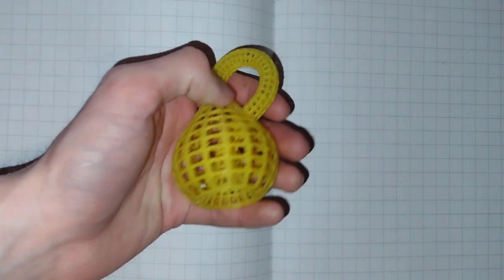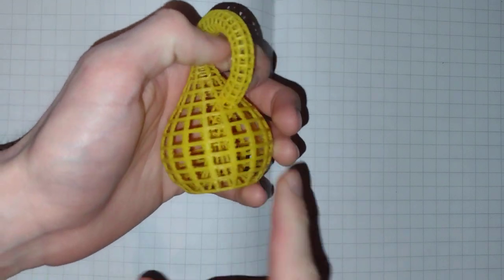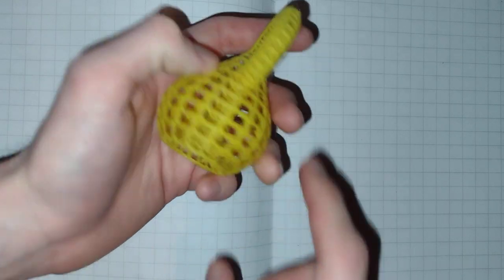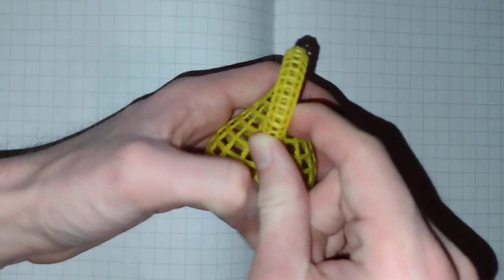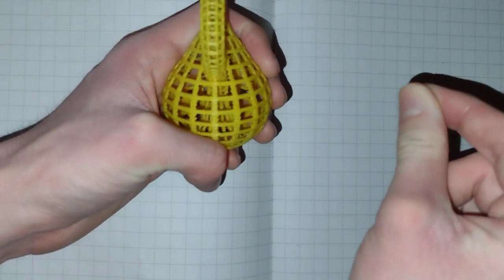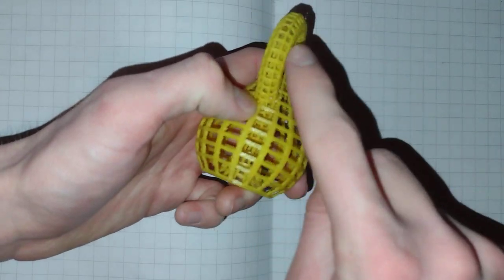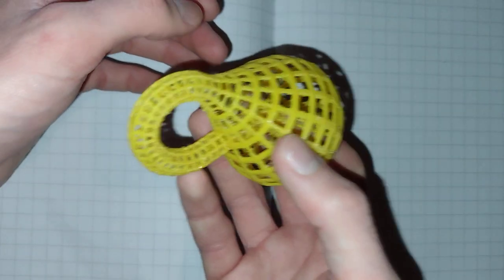There is one problem with all Klein bottles in our three-dimensional universe, and that's this self-intersection here. You see, Klein bottles are actually four-dimensional shapes. And in four dimensions, this would just simply sidestep into the fourth dimension, which we can't easily visualize, fourth dimension of space. And then connect round all nicely without any self-intersections. However, we only have three dimensions of space. So sadly, that's not possible.